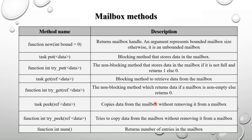The peek method is similar to the get method, but the difference is that it copies the data from the mailbox without removing it. The get method takes out the data from the mailbox, but peek just copies the last element without removing it from the mailbox. Try_peek is the non-blocking version — it tries to copy data from the mailbox without removing it.